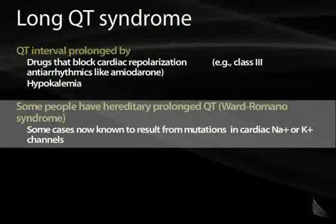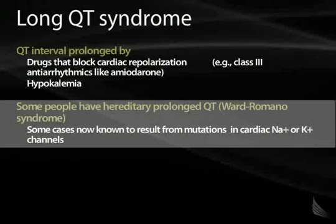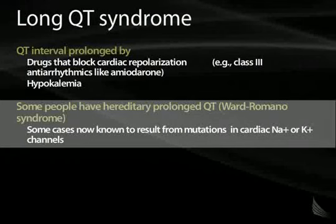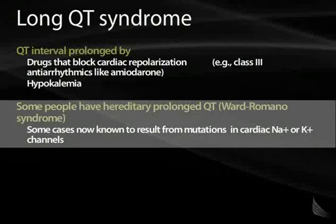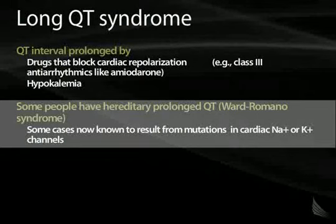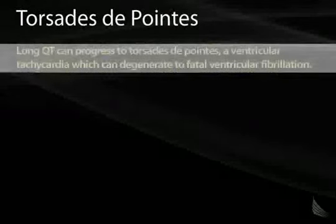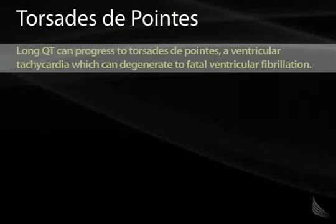Anything that causes hypokalemia can prolong the QT on the EKG. Some patients actually have a hereditary prolonged QT syndrome, also known as Romano-Ward syndrome, which results from mutations in either sodium or potassium channels. Long QT syndrome is dangerous because it can progress to torsades de pointes — the longer the QT interval, the more likely there is to be an ectopic beat within that interval.